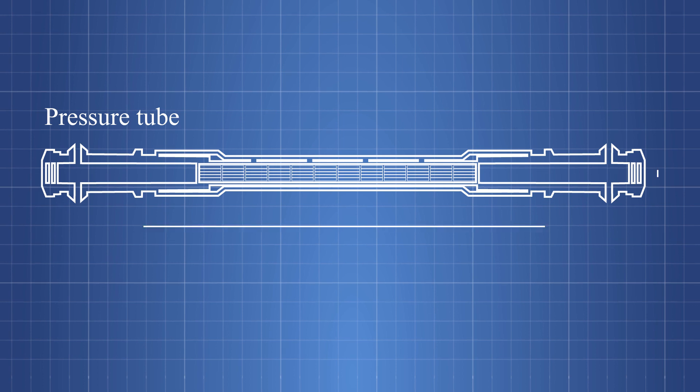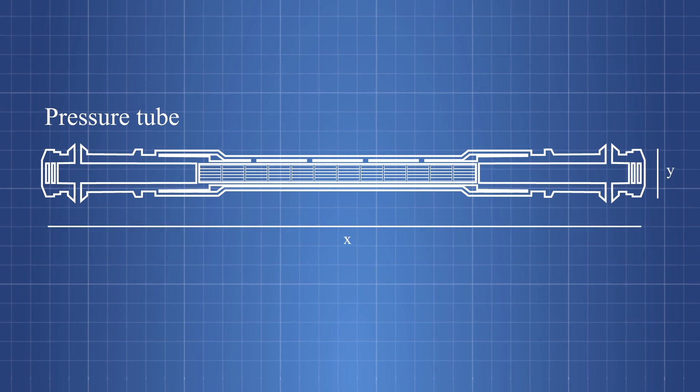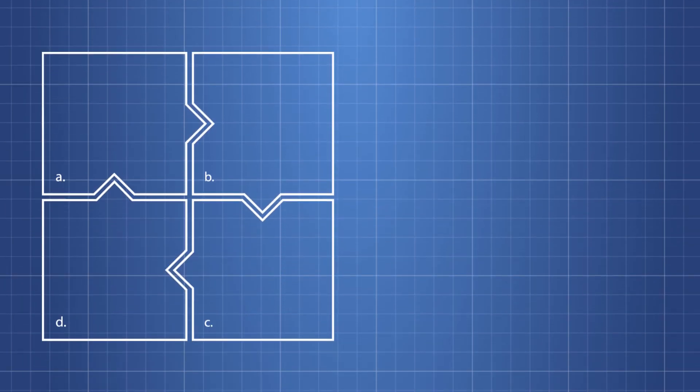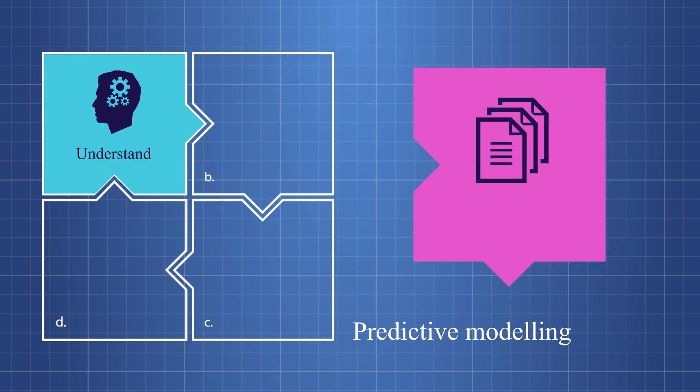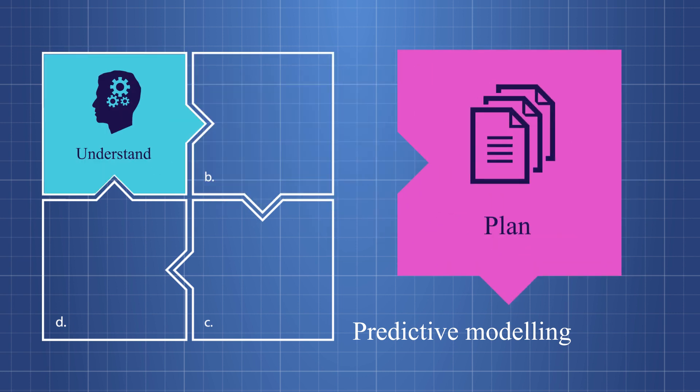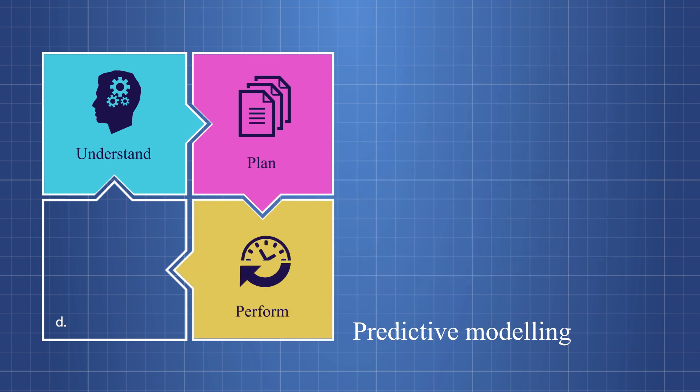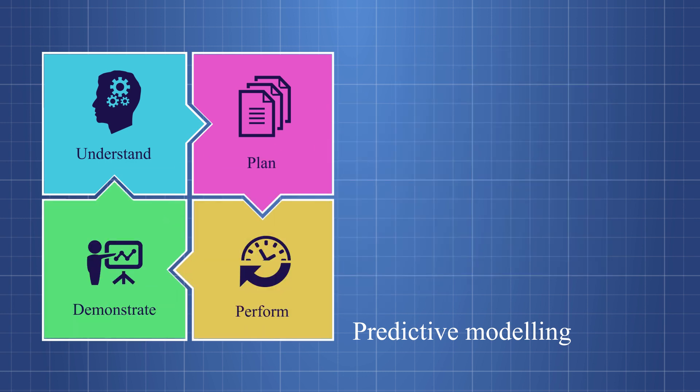Engineers deliberately designed CANDU pressure tubes to withstand this operational wear and tear. Through extensive research and predictive modeling, licensees must understand the pressure tube's ability to withstand any deterioration and provide the CNSC with periodic inspection plans. Licensees must perform inspections and demonstrate that each pressure tube is able to continue to safely operate into the future.